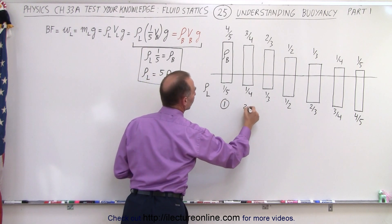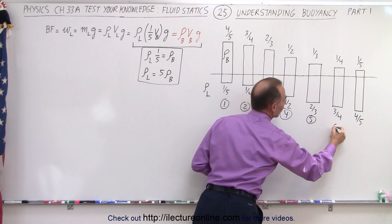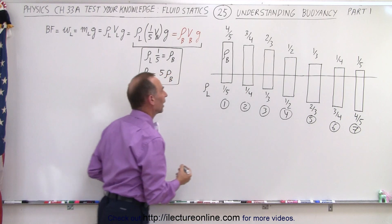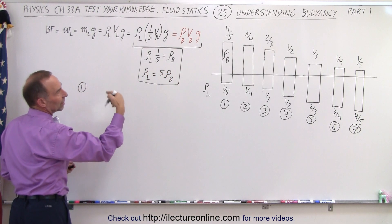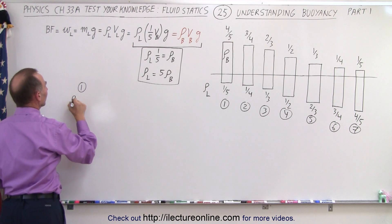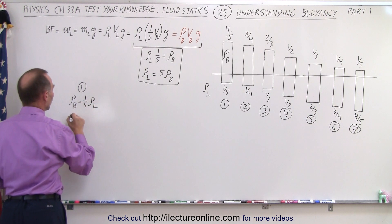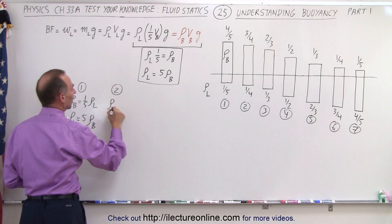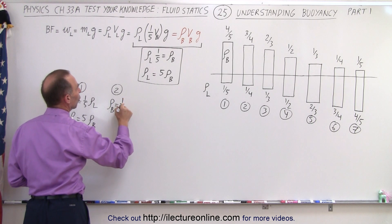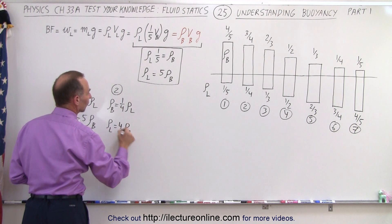So in case number one, when four-fifths of the object sticks out, the density of the block is equal to one-fifth the density of the liquid, or the density of the liquid is equal to five times the density of the block. In case number two, the density of the block is equal to one-quarter the density of the liquid, or the density of the liquid is equal to four times the density of the block.